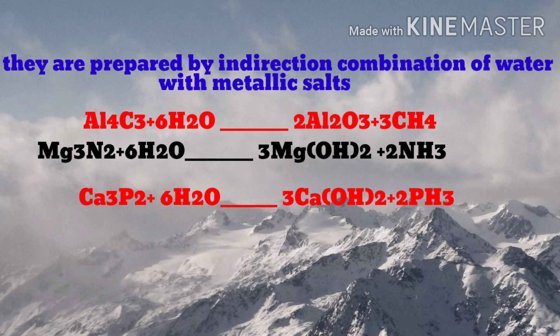For example, aluminium carbide when reacted with water produces alumina and methane. Magnesium nitride when reacted with water produces magnesium hydroxide and ammonia.